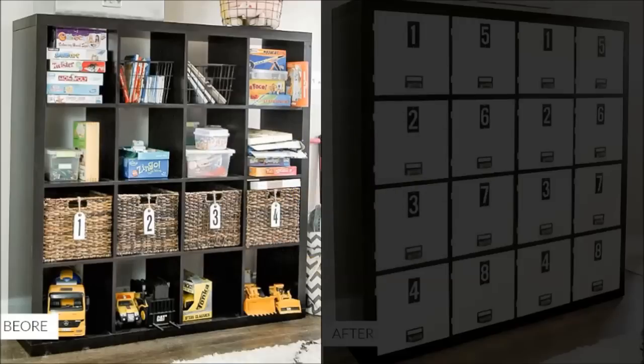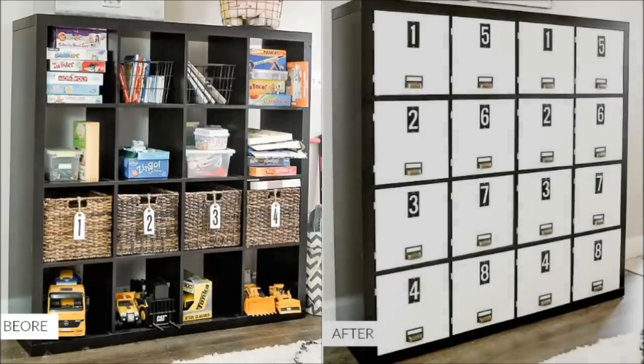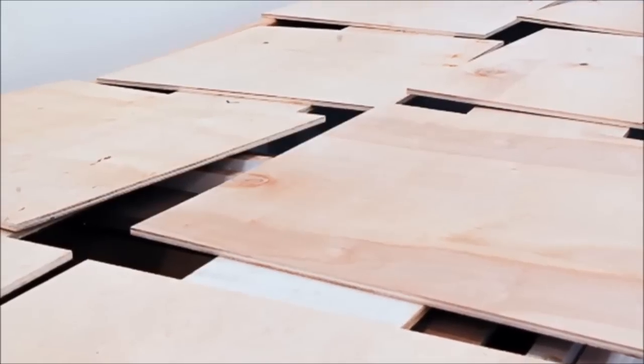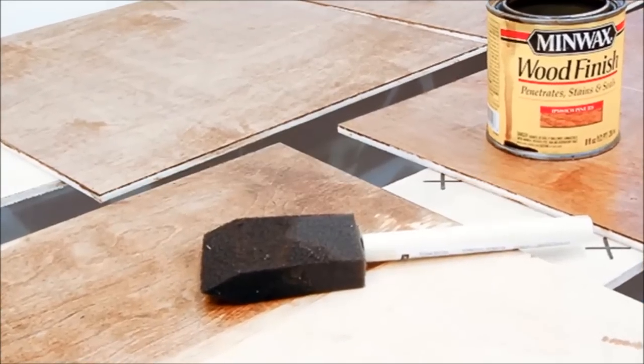Number 3. The reason people love the Expedit bookcase is because it offers 16 cubbies for storage. But Katie took it to the next level by adding locker doors on the front of each shelf so she could keep her odds and ends out of sight. First, cut the 4x4 underlayment into 16, 13x13 squares and then apply a light coat to each door.